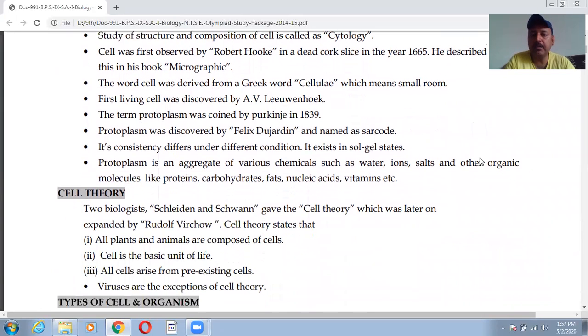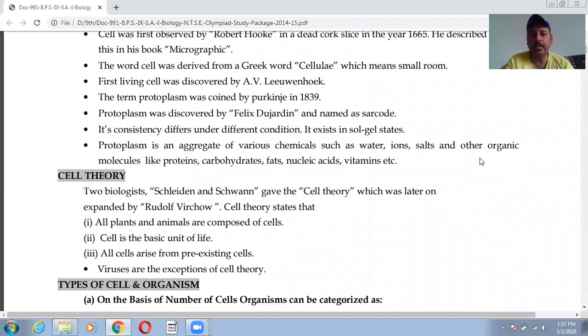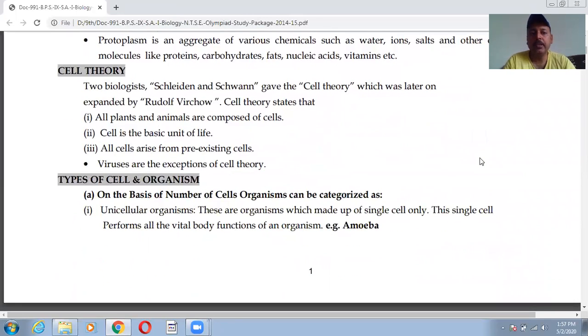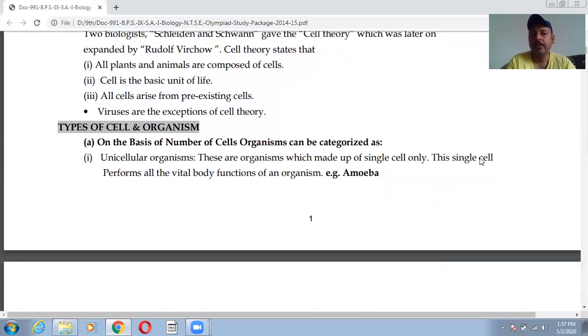Its consistency differs under different conditions. So protoplasm is an aggregate of various chemicals such as water, iron, salt and other organic molecules. Cell theory: two biologists Schleiden and Schwann gave the cell theory, very important. One more question can come: who gave the cell theory? Which was later on expanded by Rudolf Virchow. Cell theory states that all plants and animals are composed of cells. Cell is the basic unit of life and all cells arise from pre-existing cells. That means cells are arising from cells which were pre-existing already. And viruses are the exceptions of the cell theory.